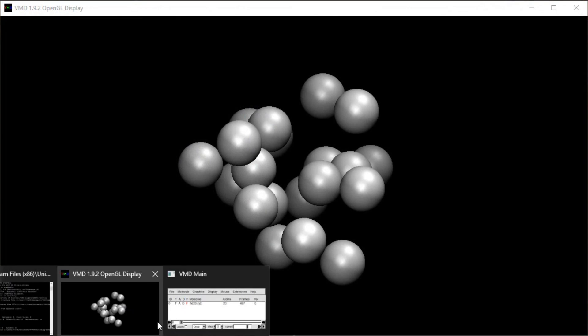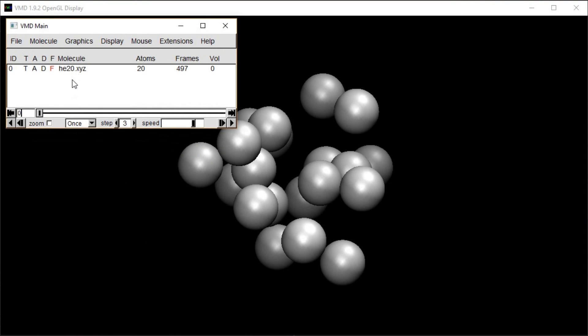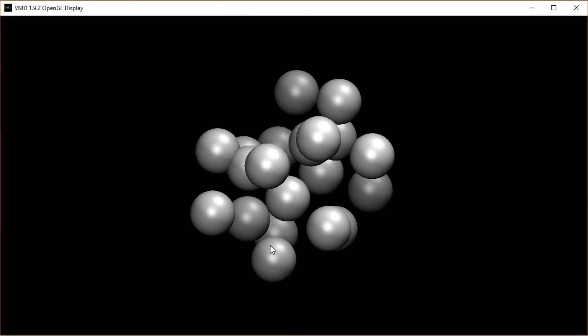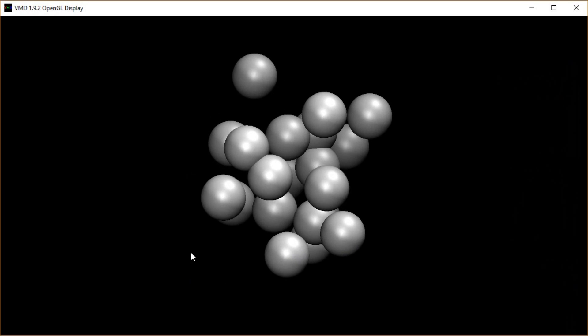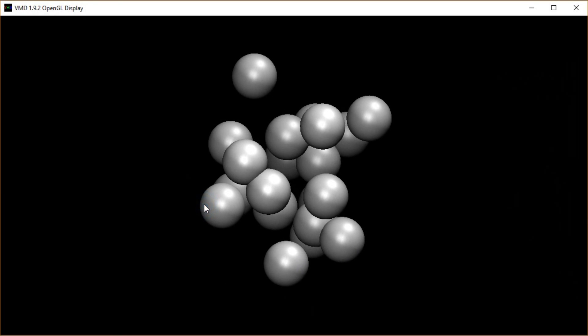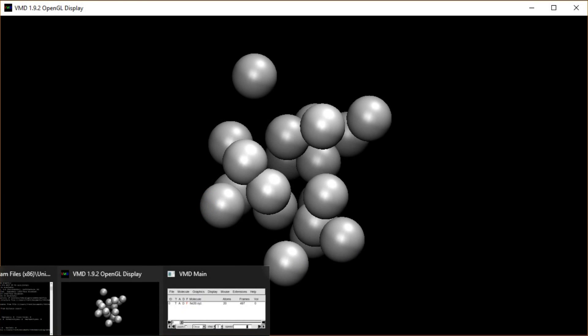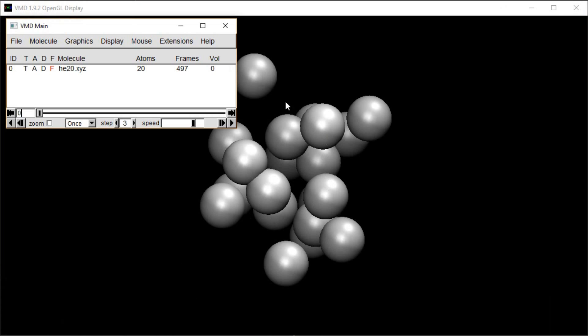So I can load this file in VMD and actually watch a trajectory movie of this as we start out in kind of this just randomly oriented molecule that I started out with. And I want this to collapse down to a minimum energy structure. It's not guaranteed to collapse to a global minimum, but it will give me a local minimum if it completes.